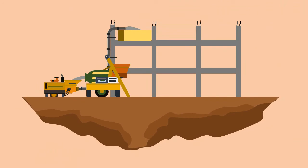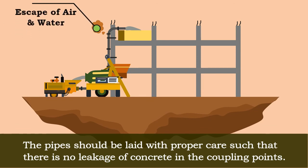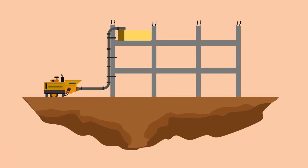The pipes should be laid with proper care such that there is no leakage of concrete at the coupling points, as any leakage results in the escape of air and water, which in turn impedes the pushing of concrete. In case of vertical pipe transportation, there must be sufficient starting distance provided.